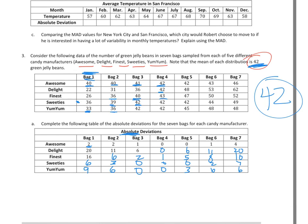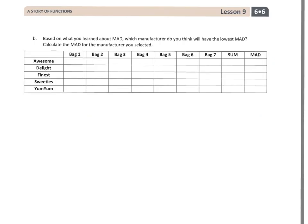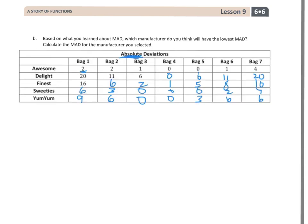And, I know on the next page, we have another question in there. And, what we're going to do is take a look at that right now. So, let's go over to page 3. So, we're here on page 3. And, I'm going to bring in my chart that I already filled out because we already did the absolute deviation. So, there it is right there. And, I've put it on top because I want to look at this chart. It says, based on what you learned about mean absolute deviation, which manufacturer do you think will have the lowest mean absolute deviation? Calculate the mean absolute deviation for the manufacturer you selected.